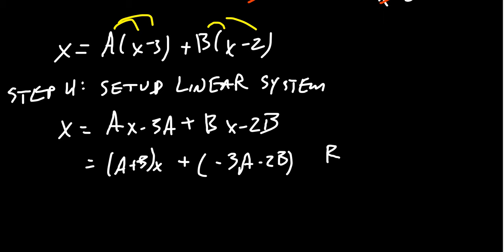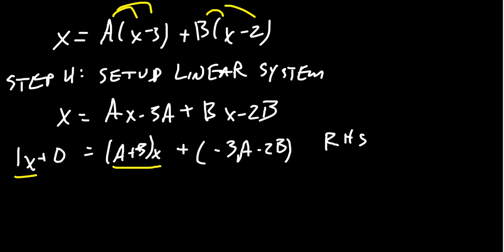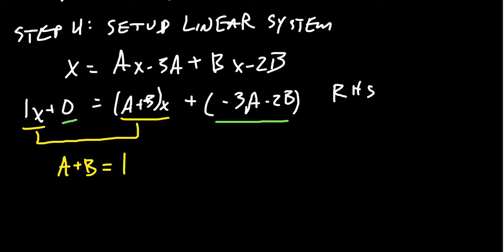The left-hand side simplifies to 1 times x plus 0. For the two polynomials to be equal, their coefficients must be equal. Equating the coefficients of x: a plus b equals 1. Equating the constant terms: negative 3a minus 2b equals 0. This gives us a system of two linear equations with two unknowns, which we can solve by elimination, substitution, matrices, or determinants.